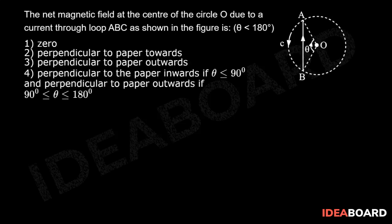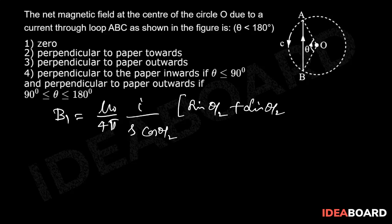Now, the magnetic field at O due to straight conductor AB is B₁ = (μ₀/4π)(I/R cos(θ/2))(sin(θ/2) + sin(θ/2)), which equals (μ₀/4π)(I/R) tan(θ/2).